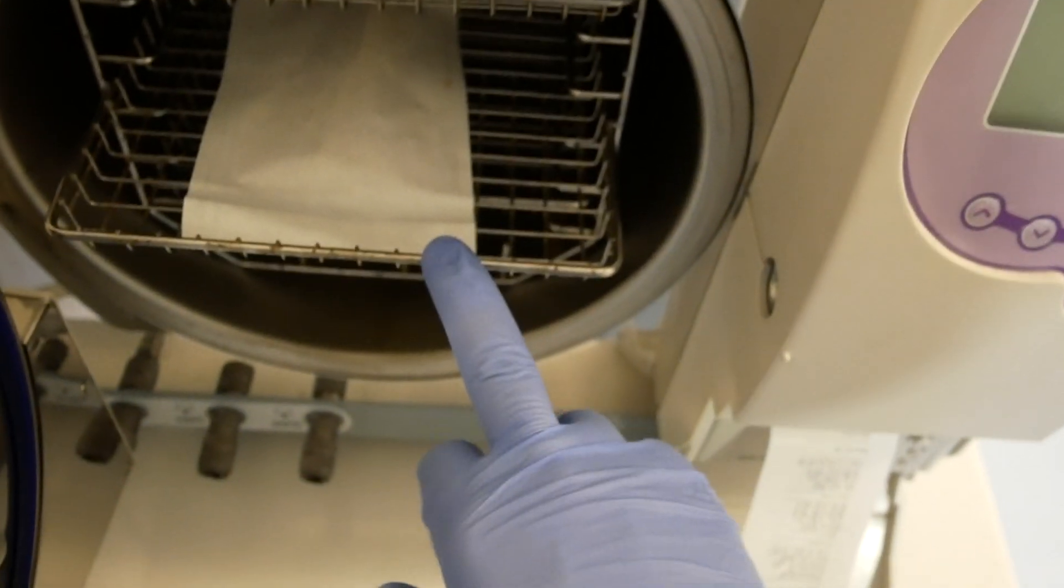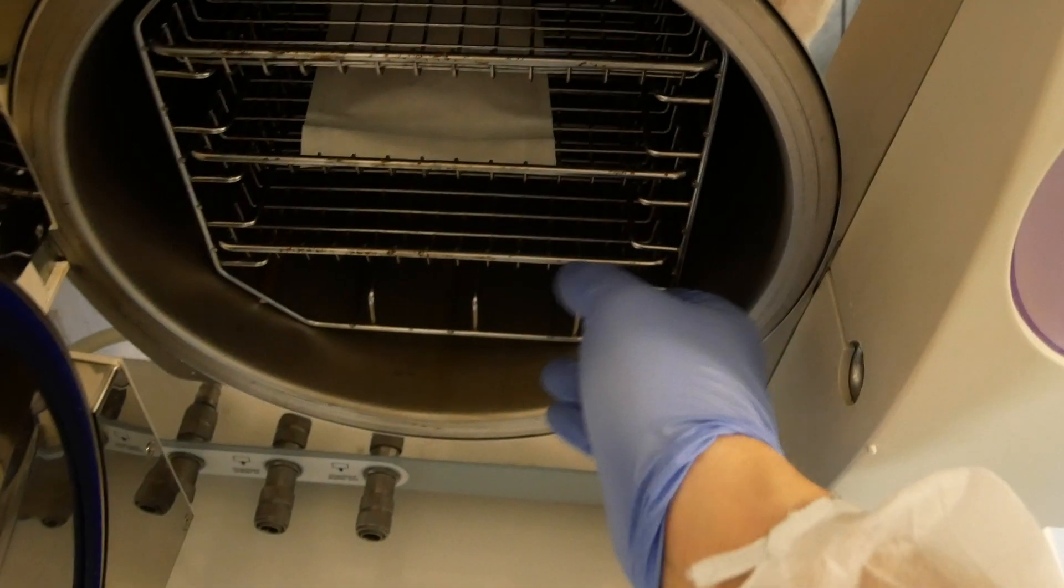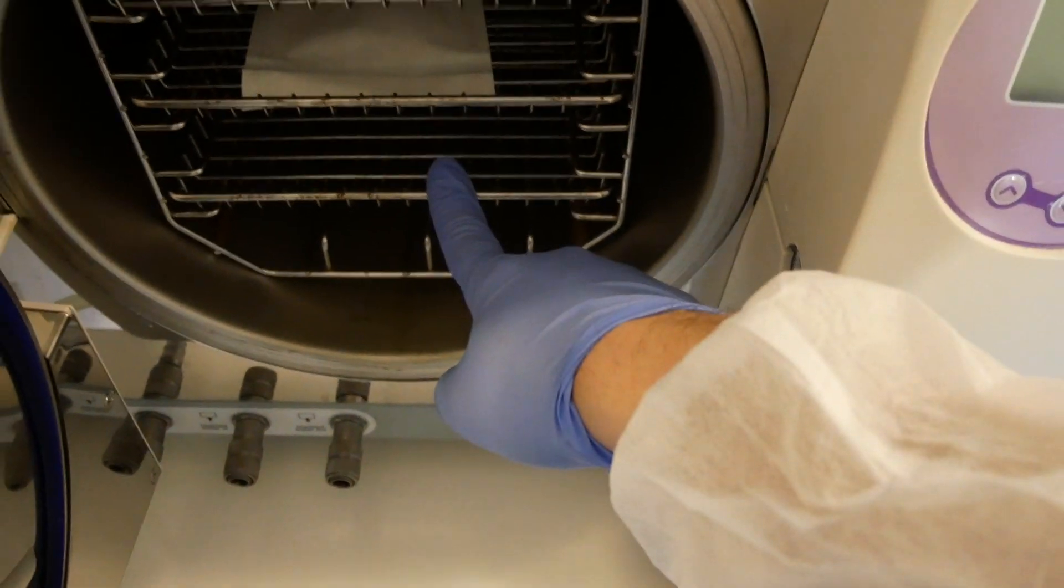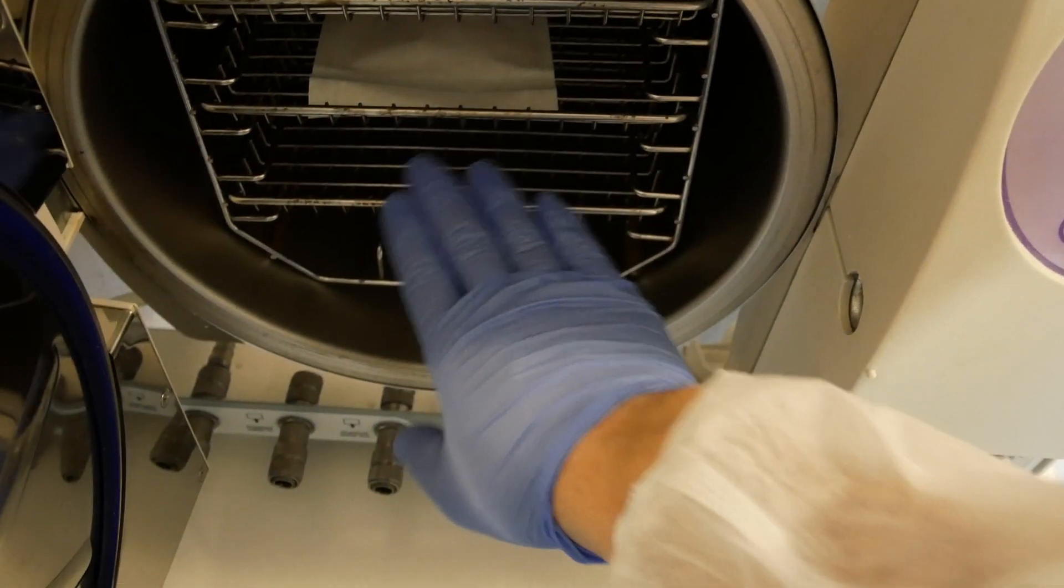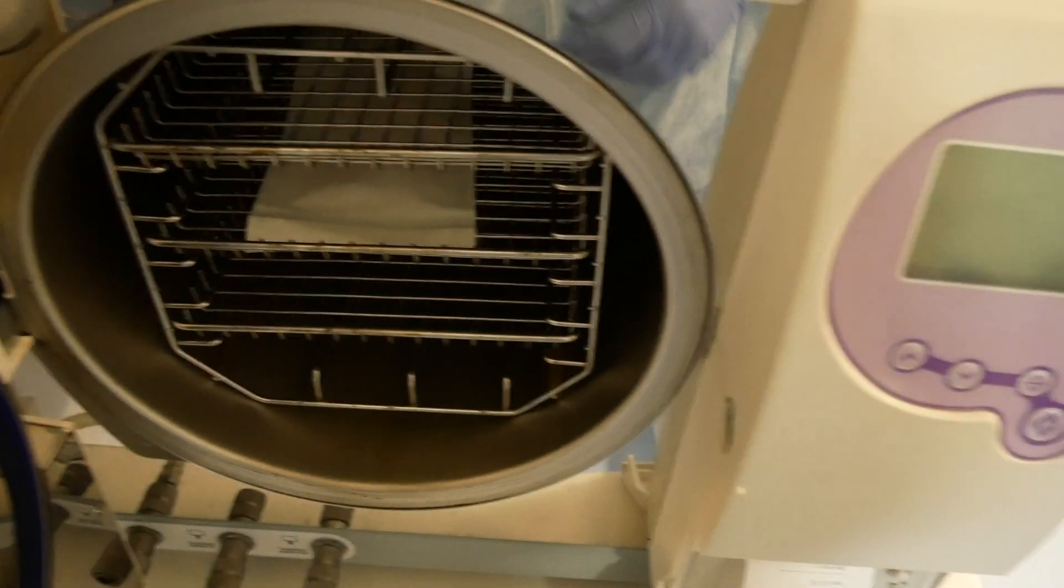Also, a class 5 indicator strip goes with every sterilization cycle. This ensures everything is checked and in order, and it's an extra measure you can take to ensure you have a proper sterilization cycle.